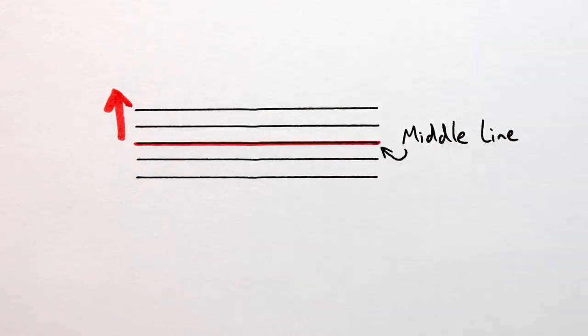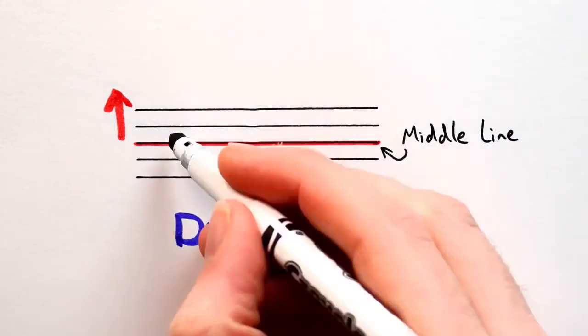Rule 2: If a note is above the middle line, its stem will go down, like so.